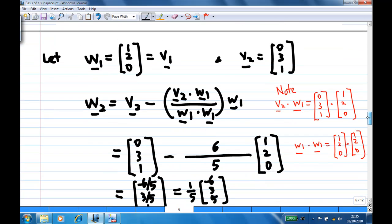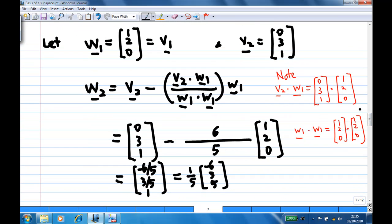So this is how we do this question. Let w1 equal to v1, which is 1 2 0, and v2 equal to 0 3 1. We are going to construct w2 now. This w2 equals v2 minus v2 dot w1 over w1 dot w1. In this case, v2 is 0 3 1.